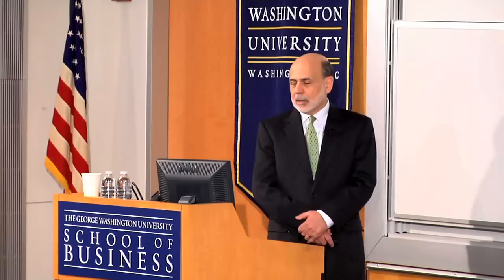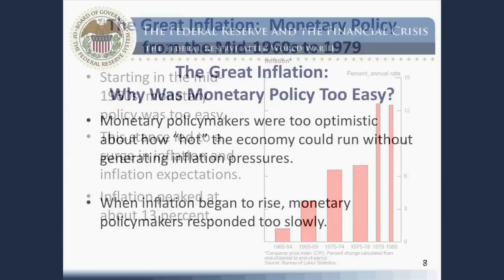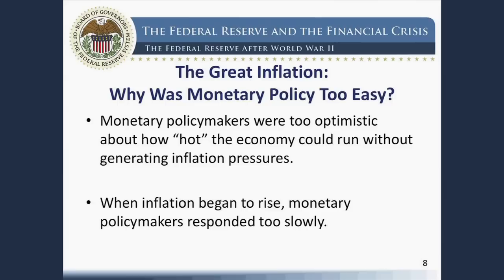However, starting in the mid-1960s, for a variety of reasons, monetary policy became too easy. After a period of time, and given that the Fed didn't change its policy stance, this easy monetary policy led to a surge in inflation and inflation expectations. From 1960 to 1964, inflation averaged only a little over 1 percent a year. It picked up during the Vietnam period — 1965 to 1969 — and even higher in the early 1970s. By the end of the 1970s, the CPI inflation rate peaked at about 13 percent. So inflation was a growing problem starting in the mid-1960s and into the 1970s.